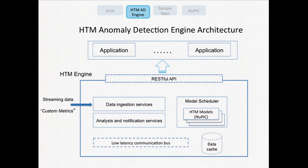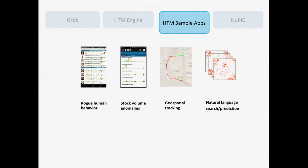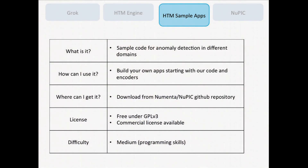That's the second way you can use Numenta technology today. Third, the HTM sample applications — you've seen this slide before. These are applications in different domains that run on HTM code. All the sample code is up on our open source domain, and you can download them under GPL version 3. If you want to use these in a commercial product, we have a license available for that as well.